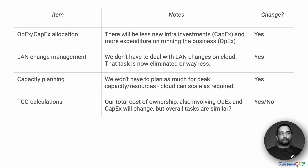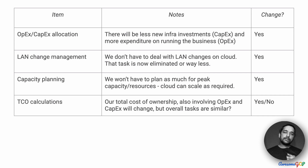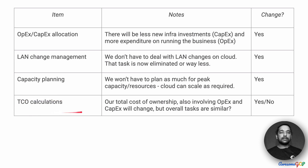How about TCO calculations? Total cost of ownership involves things like OPEX, CAPEX, land management, the people working on the project, and allocation of resources. There are still going to be TCO calculations that need to be done. The line items might vary a bit and the values of those line items might change, but the process of doing TCO calculations is still going to be there. So I could argue there is not much of a change — perhaps only a weak change compared to the other points.